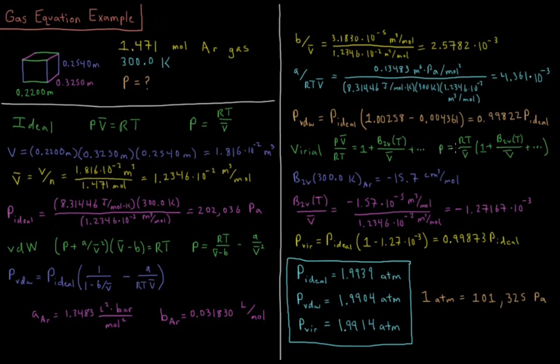So the pressure equals, multiplying both sides by RT over V-bar, P equals RT over V-bar times 1 plus B2V over V-bar, truncating the expansion.